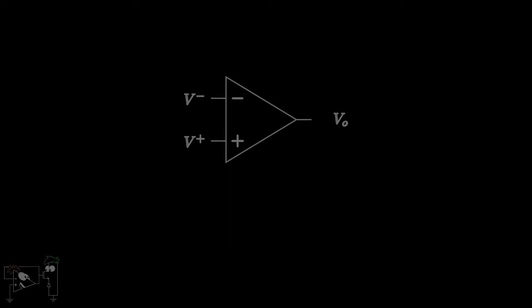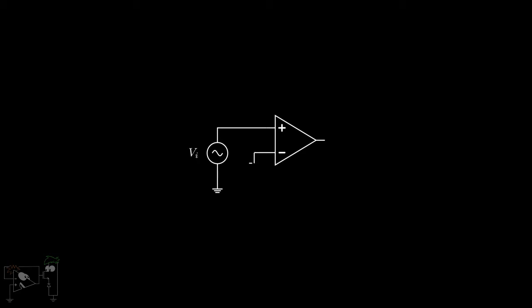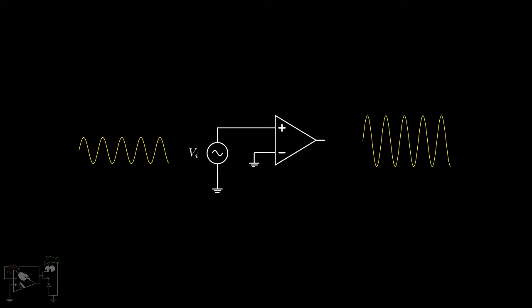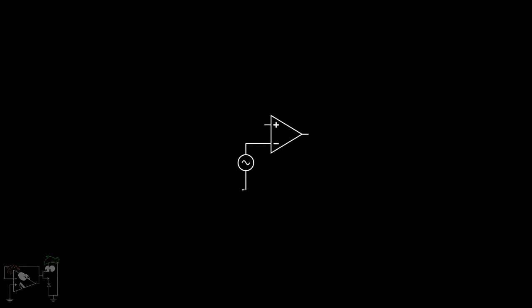Let's do a little experiment with our op-amp. Let's connect the positive terminal to a signal VI and let's ground the negative terminal. In this case, the difference between the positive and negative terminals will simply be VI, so at the output we'll get an amplified version of the input which is A·VI. Now let's do the opposite — connect the signal VI to the negative terminal and ground the positive terminal. Now the difference between positive and negative terminals is minus VI, so the output will be minus A·VI.